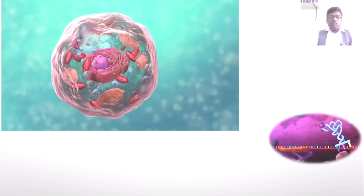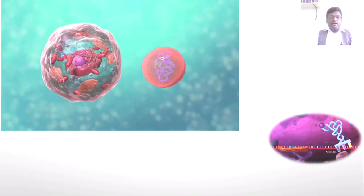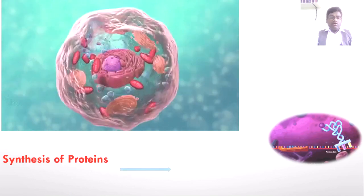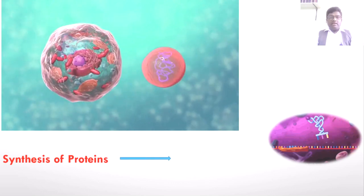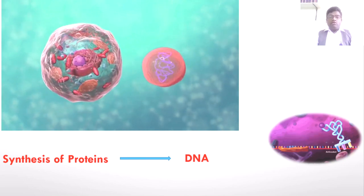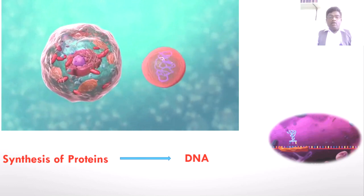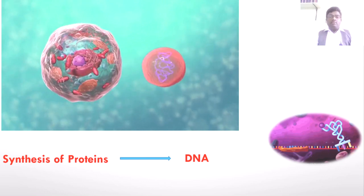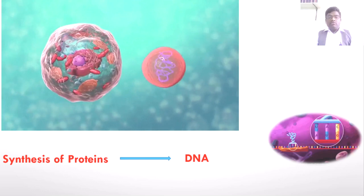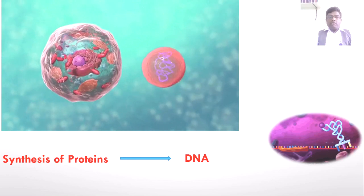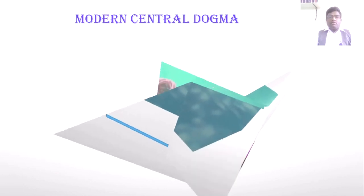For the normal function of cells, they require production of different types of proteins — protein synthesis is dependent on DNA. But how does the cell decode the DNA to produce proteins? What is the exact procedure to synthesize proteins from DNA? The answer to all such questions lies in the central dogma of life, or the central dogma of protein synthesis.